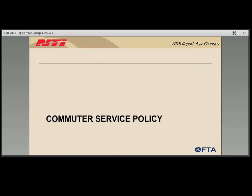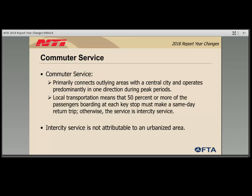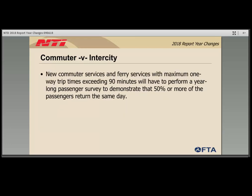FTA considers commuter service to be local service, meaning 50% or more of the passengers boarding at each key stop must make a return trip that same day. If that 50% return trip rate is not met, the service is considered intercity service rather than commuter service. This is important because intercity service is not attributable to an urbanized area or UZA. FTA has clarified that new commuter and ferry services with a maximum one-way trip time exceeding 90 minutes will need to perform a year-long survey to demonstrate the 50% or more same-day return trip rate to qualify as commuter service. If an agency has not completed the full 12-month sample by the time the annual report is submitted, they should allocate the service to the non-UZA until they can demonstrate the minimum 50% same-day return trips.